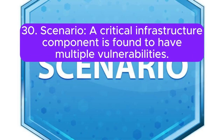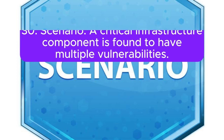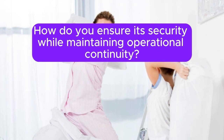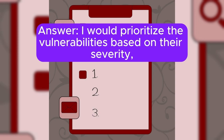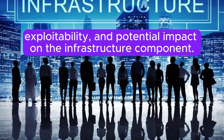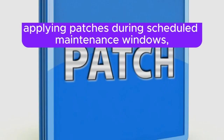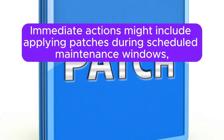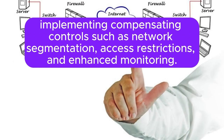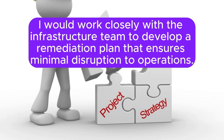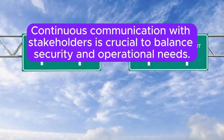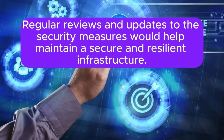Scenario 30: A critical infrastructure component is found to have multiple vulnerabilities. How do you ensure its security while maintaining operational continuity? I would prioritize the vulnerabilities based on their severity, exploitability, and potential impact on the infrastructure component. Immediate actions might include applying patches during scheduled maintenance windows and implementing compensating controls such as network segmentation, access restrictions, and enhanced monitoring. I would work closely with the infrastructure team to develop a remediation plan that ensures minimal disruption to operations. Continuous communication with stakeholders is crucial to balance security and operational needs. Regular reviews and updates to the security measures would help maintain a secure and resilient infrastructure.